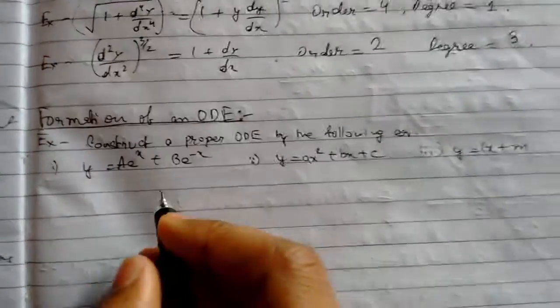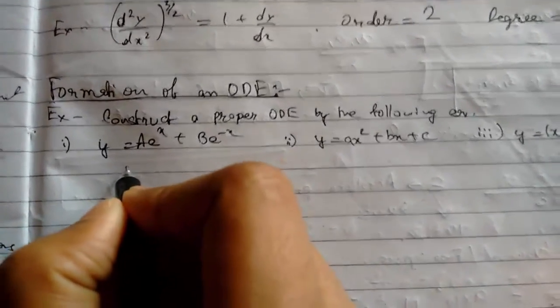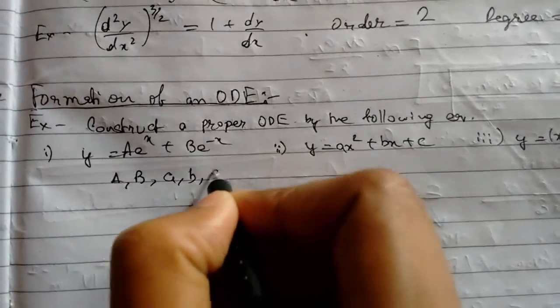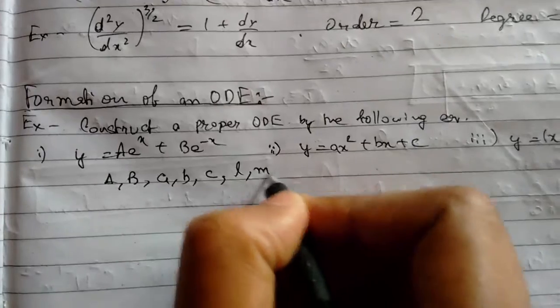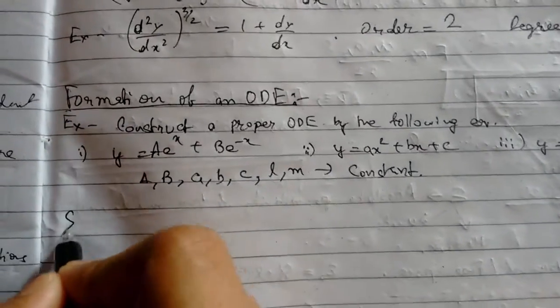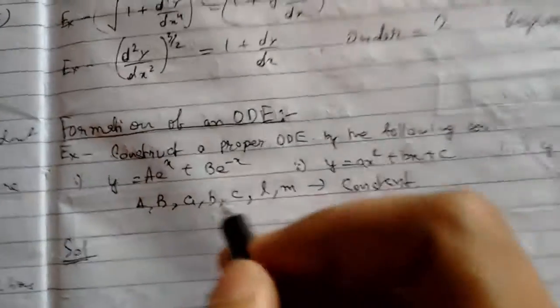So a, b, c, l, m - these are all constants. We need to form an equation. So write the solution.